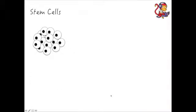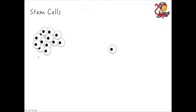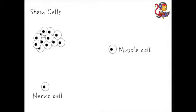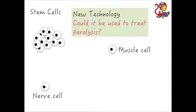The idea of stem cell research comes from the idea that you can take a stem cell from the embryo at the very early stage of cell division and that stem cell can become anything you want — for example a muscle cell or a nerve cell — and switch it on to make it something in particular. The reason this is exciting research is because of the idea that it could be used to treat things such as paralysis.